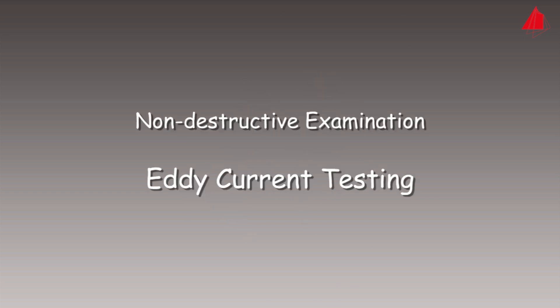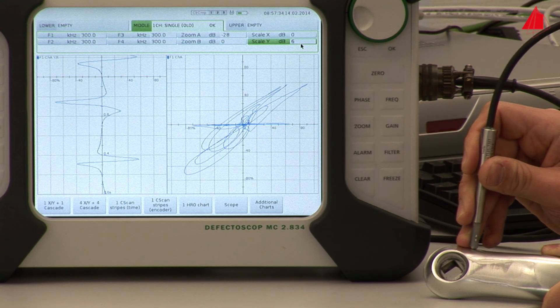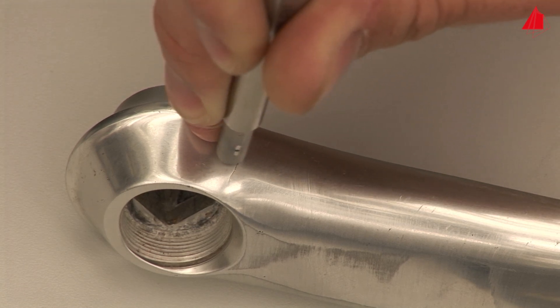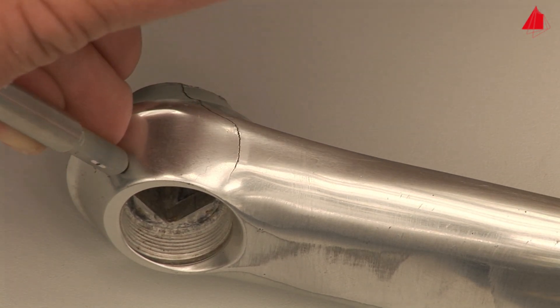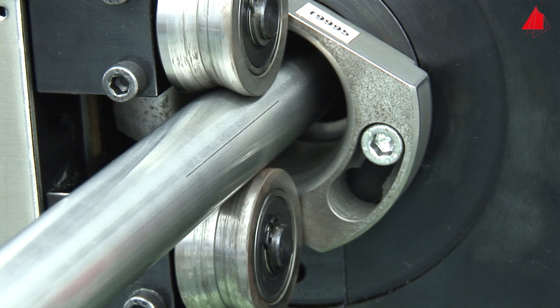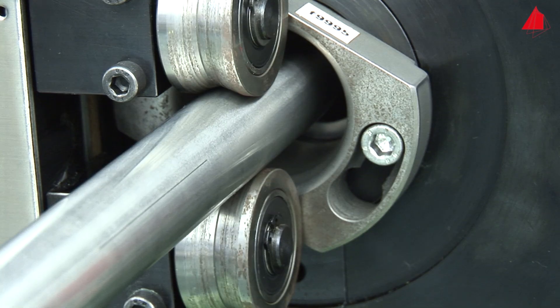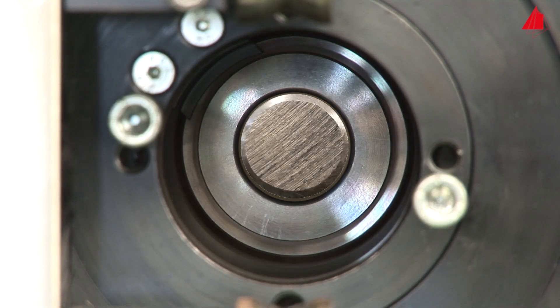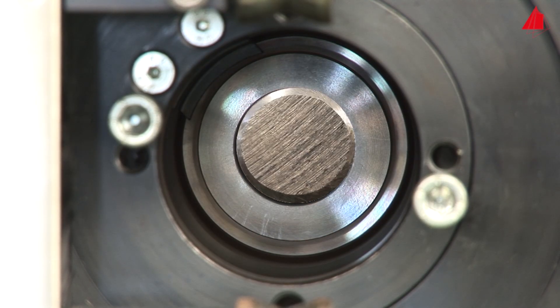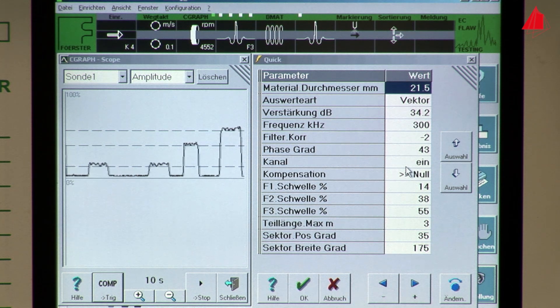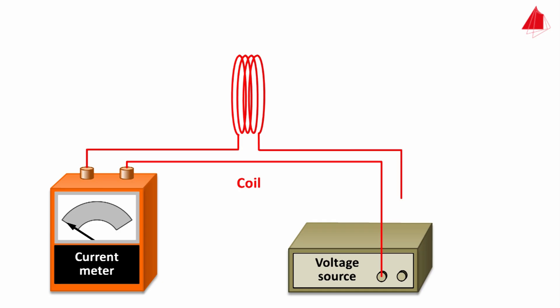Non-destructive examination: eddy current testing. Eddy current testing has been indispensable for a long time, both as a non-destructive material examination by hand and as a fully automatic method. Near-surface defects in workpieces can be tracked and specific material properties can be determined. How does eddy current testing work? It is based on electromagnetic induction.